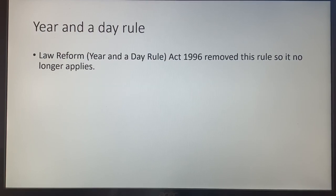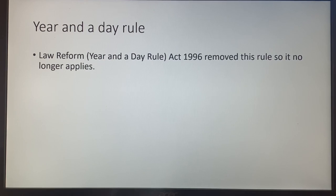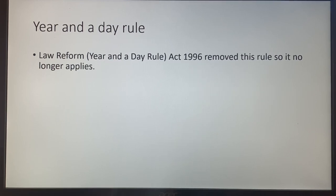The year and a day rule no longer applies, though you may come across it in your reading. It was removed by the Law Reform (Year and a Day Rule) Act. The rule was: if the person you injured didn't die within a year and a day, you couldn't be guilty of causing their death. It was based on the fact that in earlier times they couldn't reliably tell how someone had died. Just remember it no longer applies.